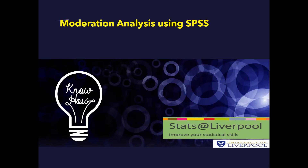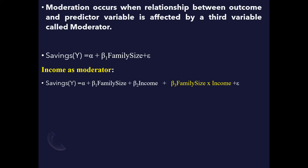Moderation analysis using SPSS. Moderation occurs when the relationship between an outcome and a predictor variable is affected by a third variable called a moderator. Basically, it is an interaction effect between two or more predictor variables.